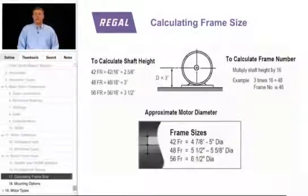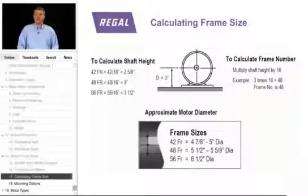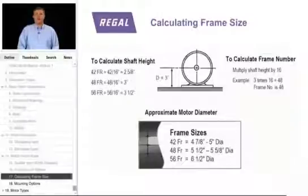Most contractors believe that is why we use the diameter of the motor — because the diameter helps us determine where the center of shaft is. On a 42 frame motor, the typical diameter is 5 inches. A 48 frame motor is about 5 and 5/8 inches. And a 56 frame is 6 and a half inches in diameter.